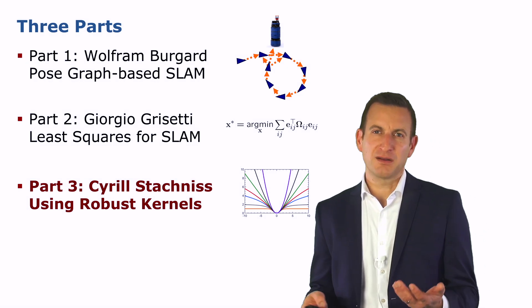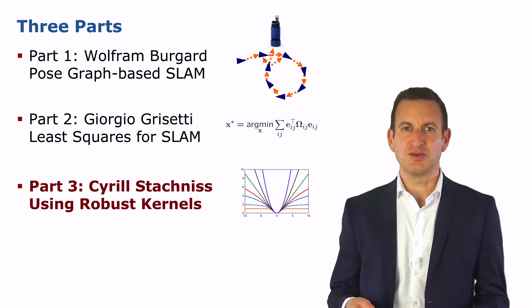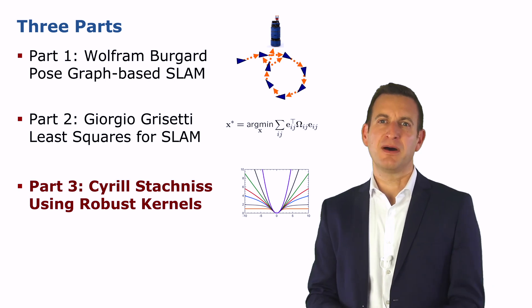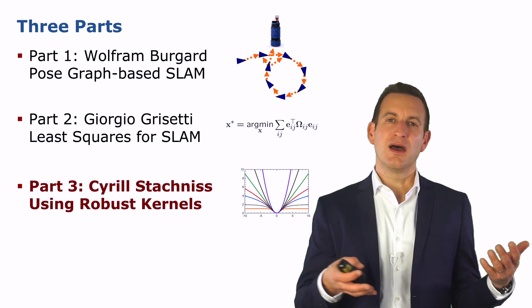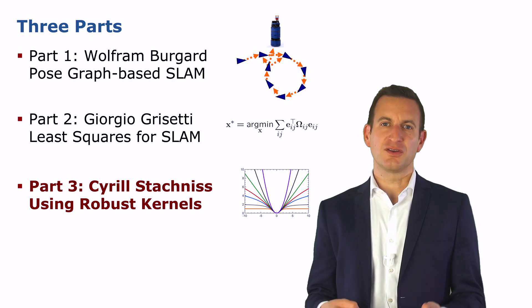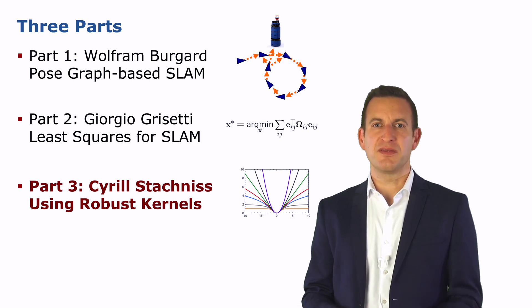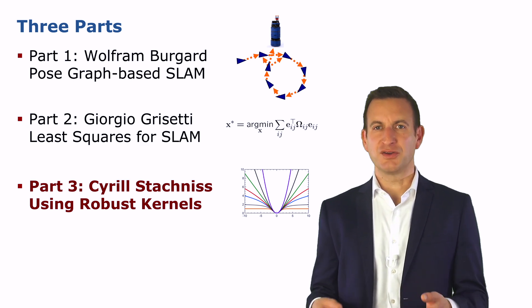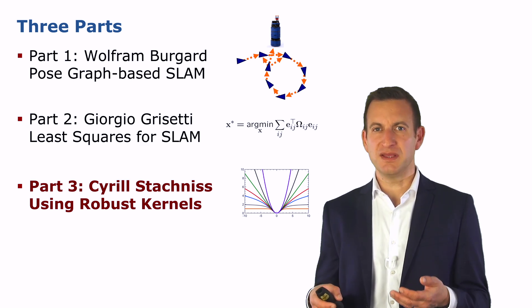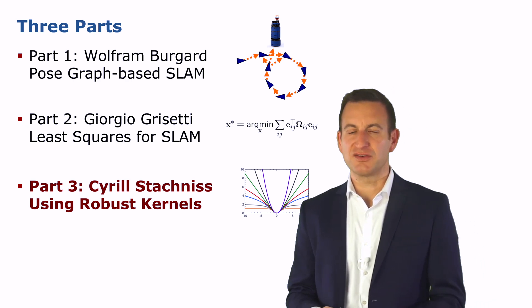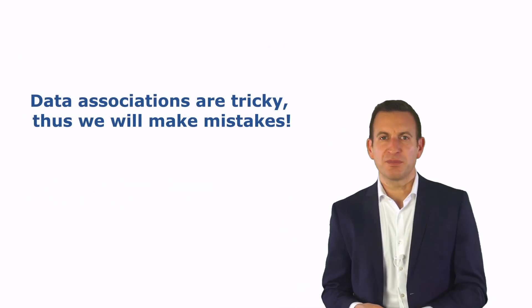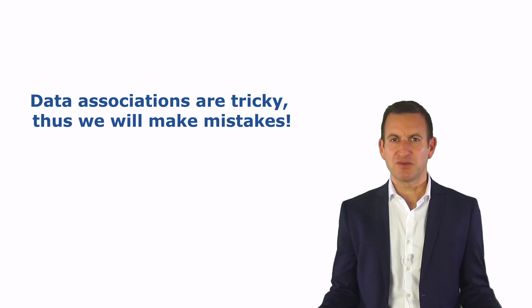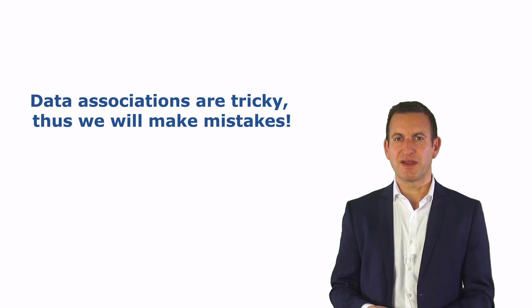In the first part, Wolfram introduced the idea of pose graphs and how to use pose graphs for modeling the SLAM problem. In the second part, Giorgio told you how to use the ideas of least squares in order to minimize the errors introduced by these constraints. And I will talk now about how to use robust kernels in order to be more robust with respect to errors in our data association. So we start with the observation that data associations are tricky to do. And thus, we will make mistakes in the long run. We simply can't prevent that.